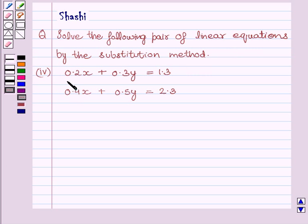First equation is 0.2x plus 0.3y is equal to 1.3 and the other equation is 0.4x plus 0.5y is equal to 2.3.